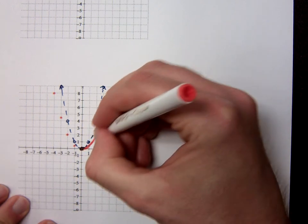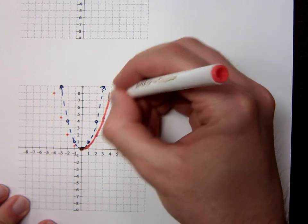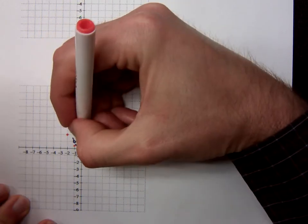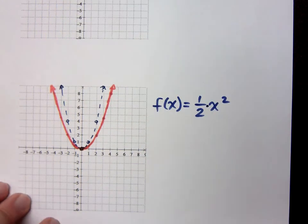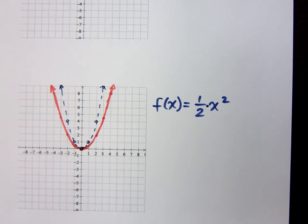So now when I graph this guy, we have this parabola. Now, it's not a whole lot wider, but it is wide enough for you to tell a difference, right?